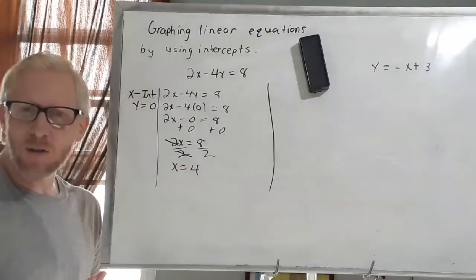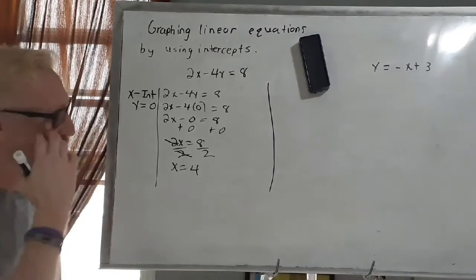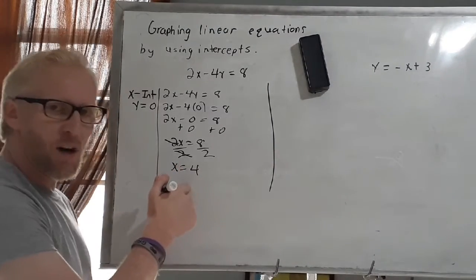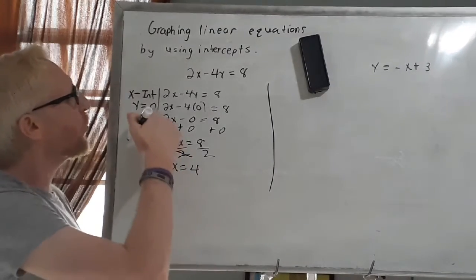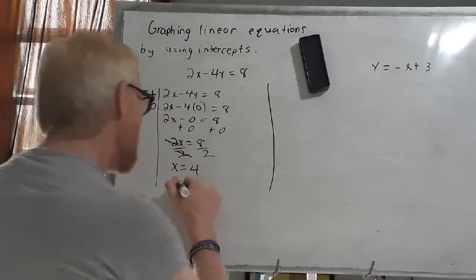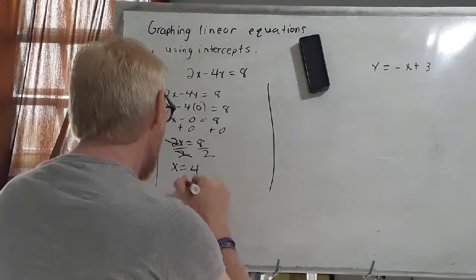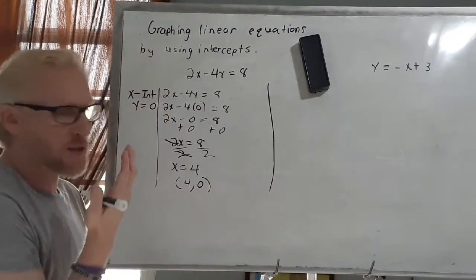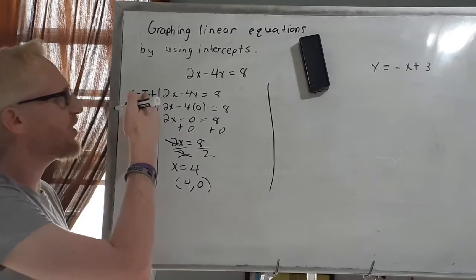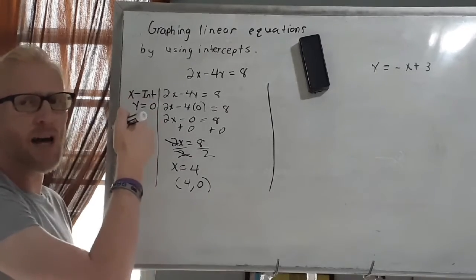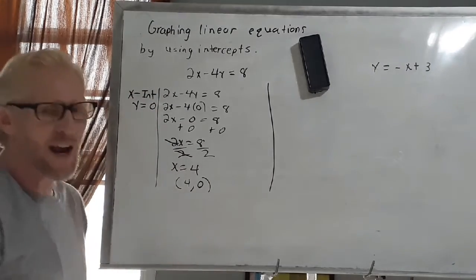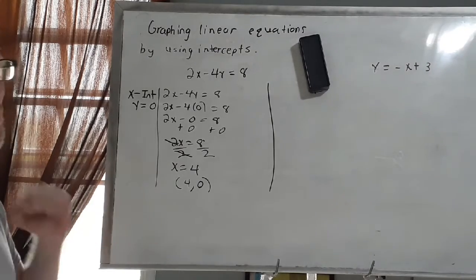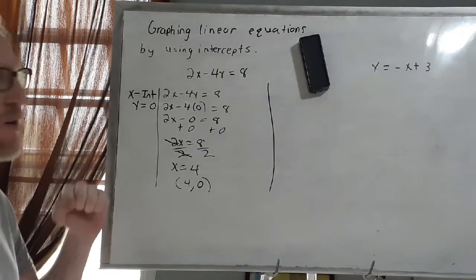So my x-intercept equals 4. Since I need to graph this function, I express this as an ordered pair. Because x equals 4 and y equals 0 (y is 0 because we set it to 0 when finding the x-intercept), my ordered pair is (4, 0).